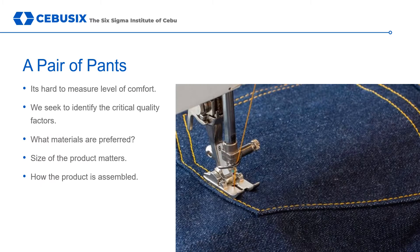When a customer purchases a pair of pants, he or she is usually concerned with how the pants fit and look — are they comfortable, is the size correct, and does the clothing match the customer's personal style? A manufacturer can take customer feedback and learn that a certain type of fabric with a certain cut is most comfortable for the target audience. The manufacturer can also determine appropriate measurements for each size. During the measurement process, these critical-to-quality factors are applied — only fabric that meets the specifications identified is used, and it is cut to specific measurements and sewn together in a specific manner.